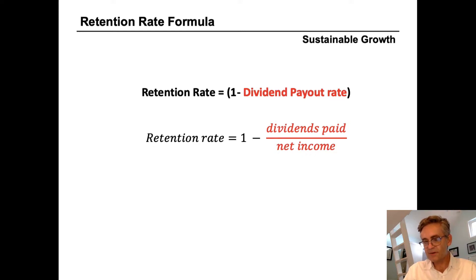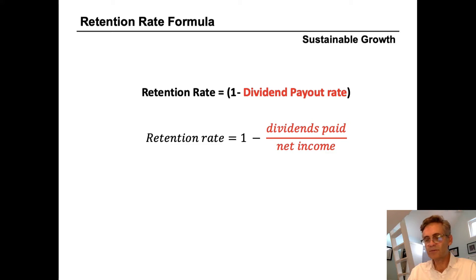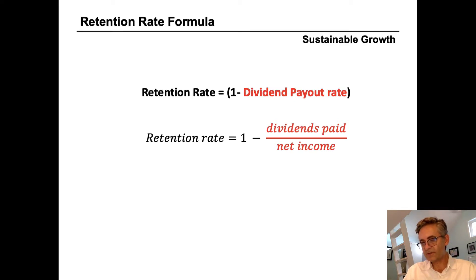In general, earnings should be retained in a company if the rate of return inside the company exceeds what investors could earn outside the company on an investment with the same risk. For example, if a company is currently generating a return on investment of 20% and investments of similar risk outside the company are only returning 5%, we would not expect this company to pay a significant dividend. We would expect them to retain the funds and reinvest them for more 20% returns. This is why growth companies often pay no dividends, while companies with no growth but steady dependable earnings — such as utility companies — often pay out a much higher percentage of their earnings as dividends. Retention rates and dividend payout rates tend to be similar within an industry and are largely a reflection of the maturity of the companies in that industry.